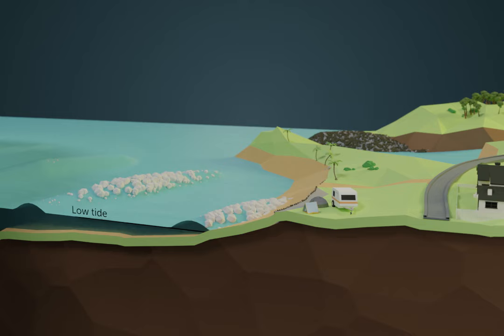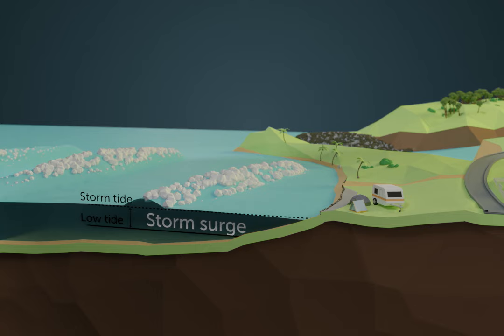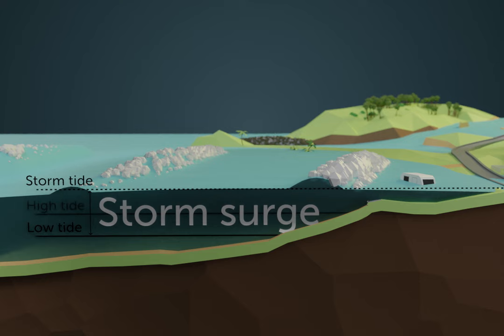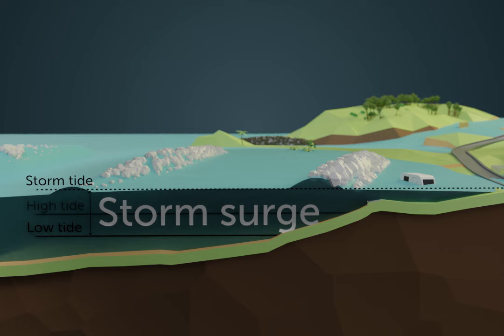If storm surge arrives during low tide, coastal impacts may be minor. If, however, storm surge arrives during a high tide, the impacts can be much more severe. The large waves accompanying low pressure systems can make coastal and structural damage much worse.